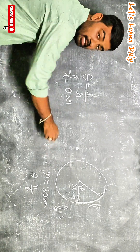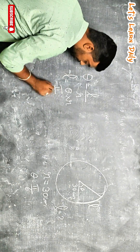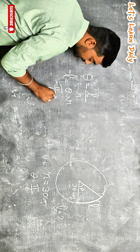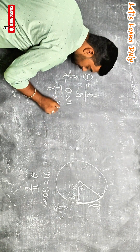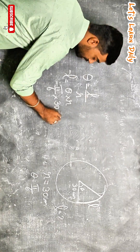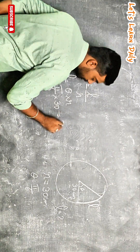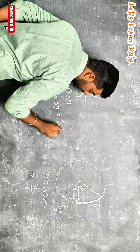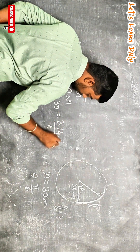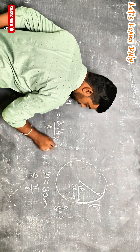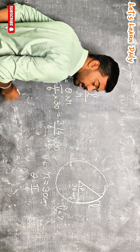Theta value is 5π/6, so pi/6 into R value 30. So 3.14 divided by 6, into 30.